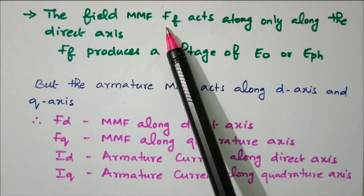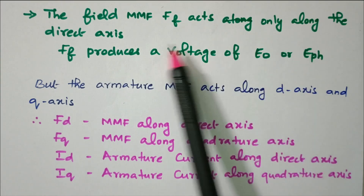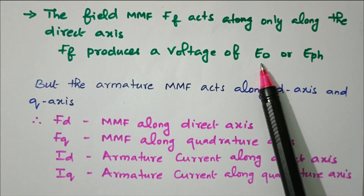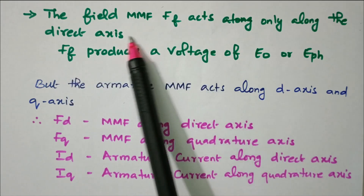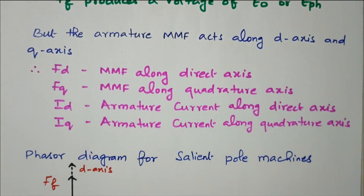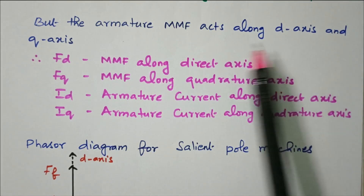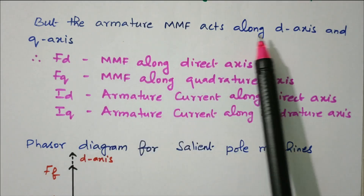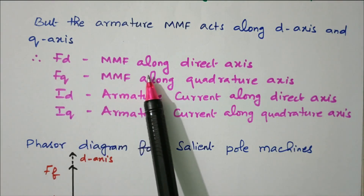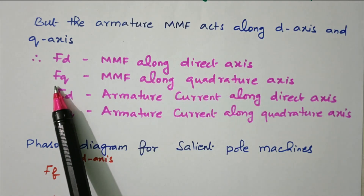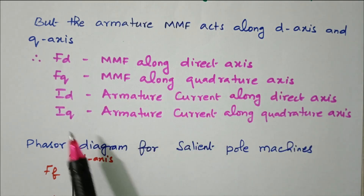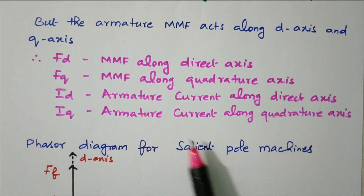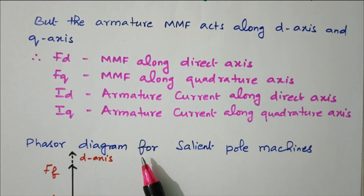The field MMF, Ff, acts only along the direct axis and produces flux φf. Ff produces a voltage E-phase, which is the phase voltage. So the phase voltage is produced by Ff acting only along the direct axis. However, the armature MMF acts along both the D-axis and Q-axis. So the field MMF acts only along the D-axis, while the armature MMF acts along both D-axis and Q-axis. Fd is the MMF along the direct axis, and Fq is the MMF along the quadrature axis. Id is the armature current along the direct axis, and Iq is the armature current along the quadrature axis. The field MMF acts only along the direct axis.